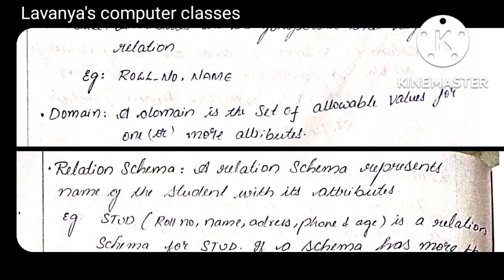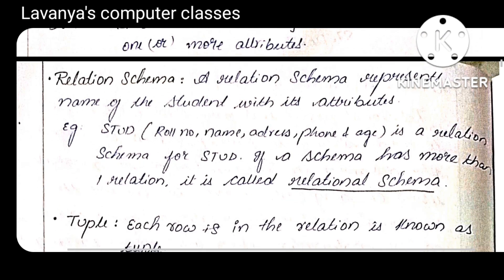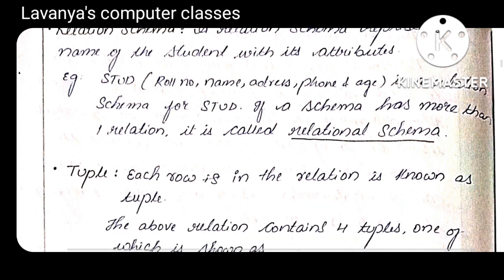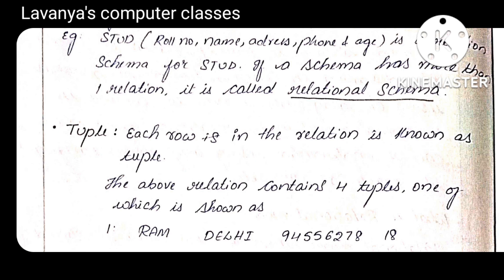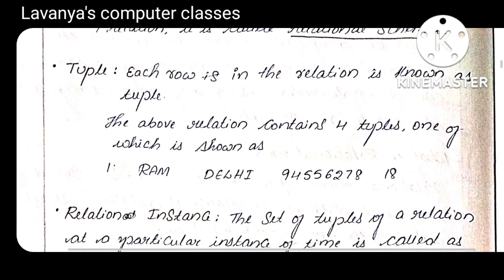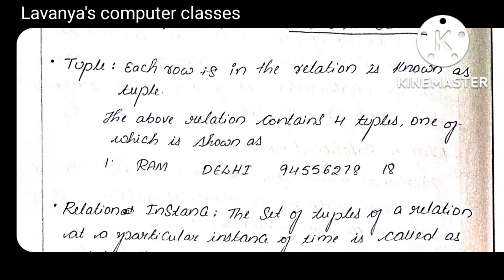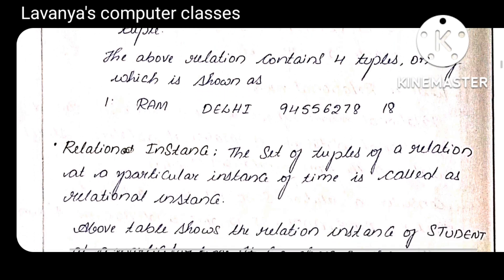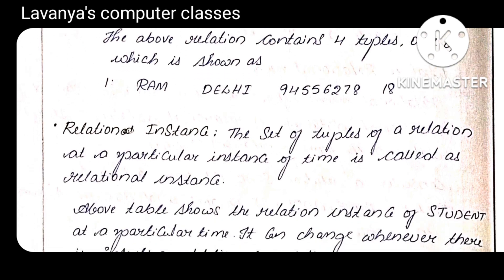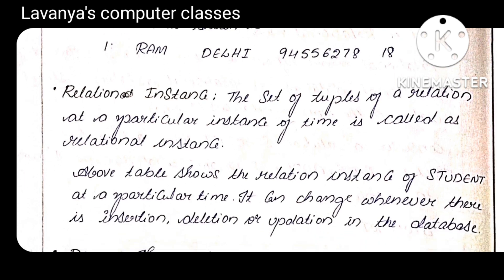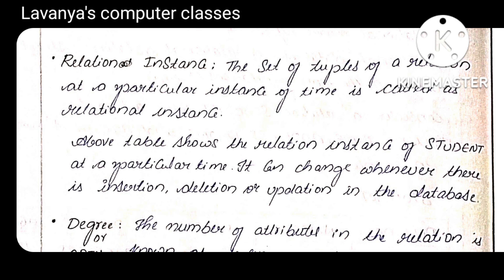Attribute: attributes are also called fields or columns — roll number, name, etc. are all called attributes. Domain: domain is a set of allowable values for an attribute. For example, serial number is a field name — it accepts only numerical data, so that data type defines the domain. Tuple: each row in the relation is known as a tuple. A horizontal row — one full record — is called a tuple.